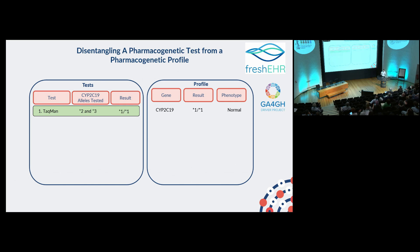I want to talk about some superb work done by members of our team looking at developing these data standards. There has been a huge amount of work with a company called Fresh Air, who supported us to develop this open-air archetype, which will be published very soon. At the heart of this data standard is disaggregating the pharmacogenetic test you have from your pharmacogenetic profile.